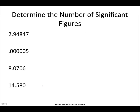Let's look at some other examples and determine the number of significant figures. Going back to our original rules, all non-zero digits are significant, so this number has six significant figures. Any zeros at the beginning of a number are never significant — they're just placeholders — so in this value we only have one significant figure, which would be the number five. Any zeros between non-zero digits are significant, so this value has five significant figures. And any zeros at the end of a number that has a decimal point are also significant, so this value also has five significant figures.